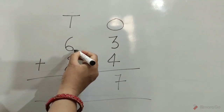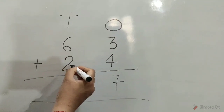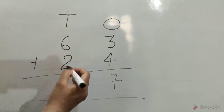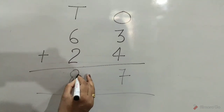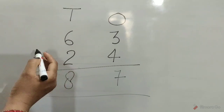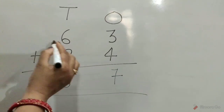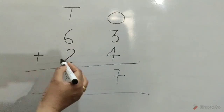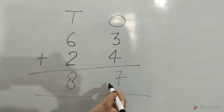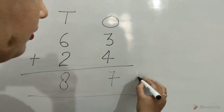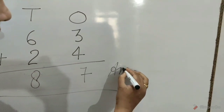6 tens plus 2 tens is equal to 8. So, 63 plus 24 is equal to 87. Write answer.